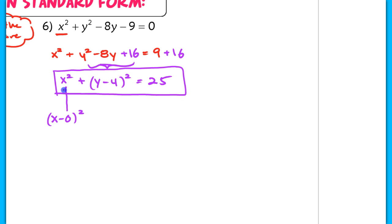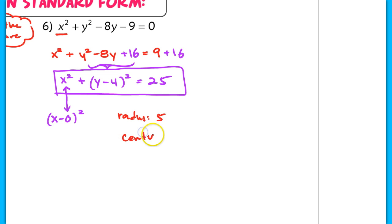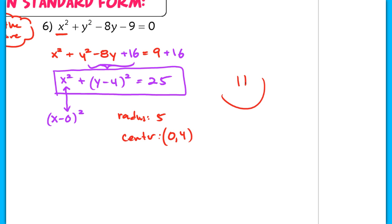You can write it as (x minus 0) squared if you'd like — both are correct. The radius is 5, and the center is at (0, positive 4). That is the end of the lesson. Very nice job — I will see you in class tomorrow.